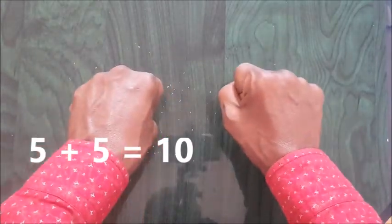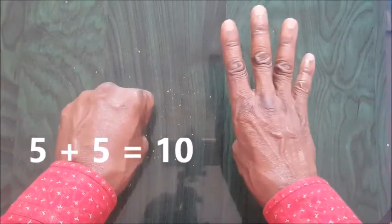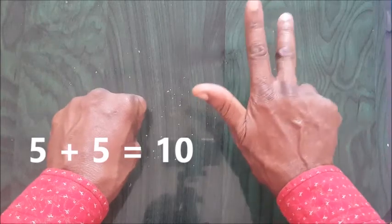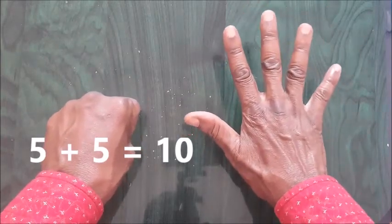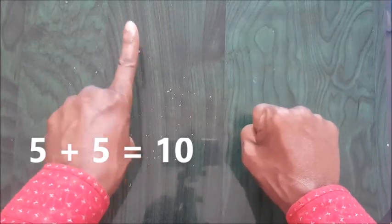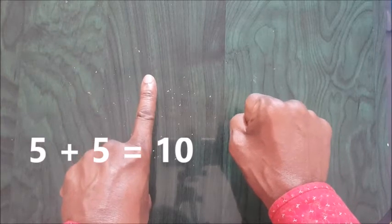Let's watch out again. 5 plus 5. It will be 1, 2, 3, 4, 5. So 5 plus 5, 1, 2, 3, 4. Since I've opened all, I have to close here and 5. So 10. The answer is 10.